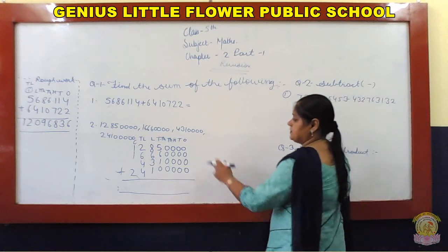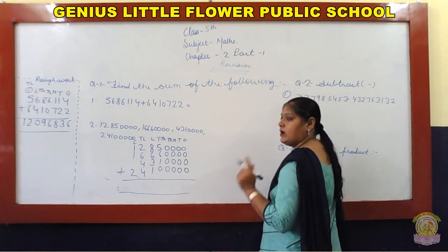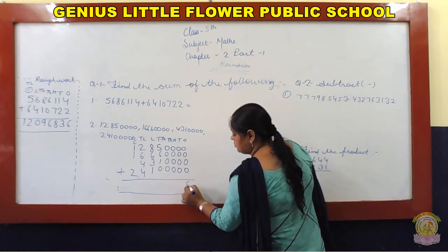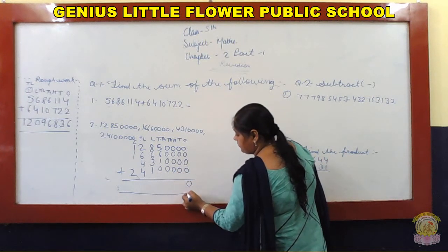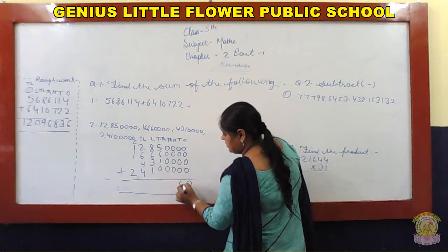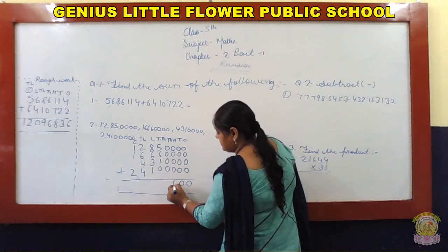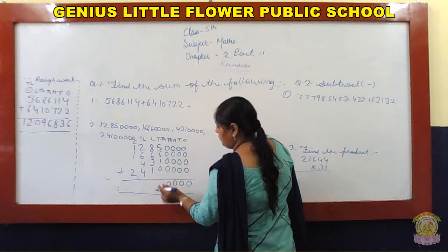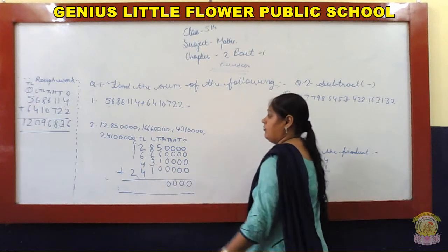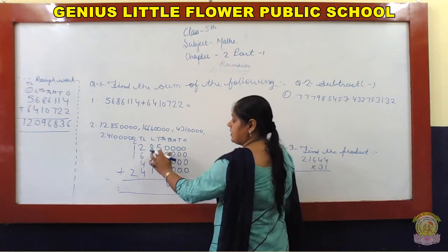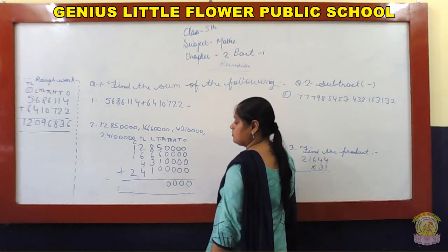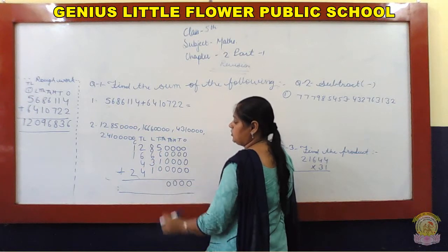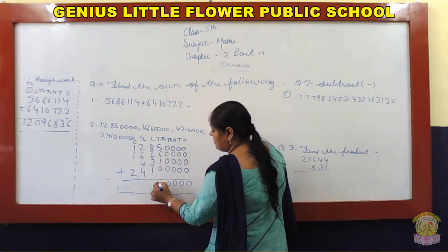Crore tak ke places. Sab se pahle step one, hum ones ko add karenge: 0, 0, 0, 0, fir se 0, next bhi 0, next bhi 0. Ab dekhe: 5 ten thousand plus 6 ten thousand plus 1 plus 0 is equal to 12 ten thousand.